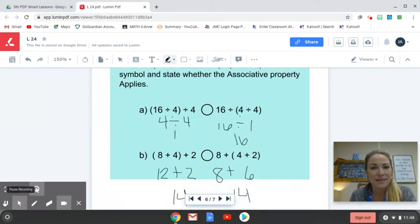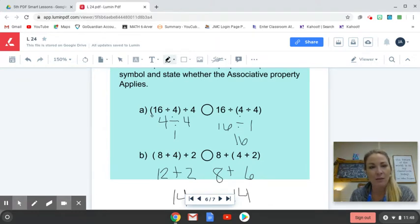Okay, so here you can see that I've worked out this expression, or both expressions, actually. And the first one here, a, we're dealing with a division problem. So, of course, I'm doing the work that's in the parentheses first. I started over here on the left. 16 divided by 4 is 4. I drop down the rest of my expression. So I have 4 divided by 4. I end up with 1 here on the left. And then I'm going to do the work on the right. Again, doing the work within parentheses first. 4 divided by 4 is 1.